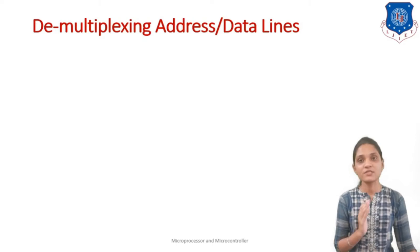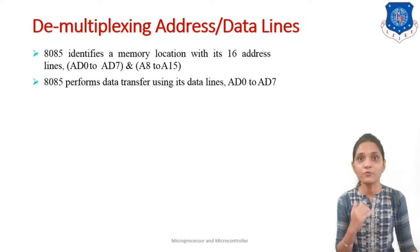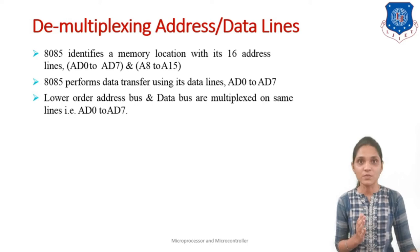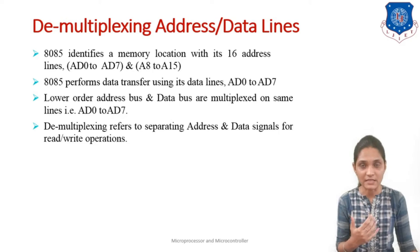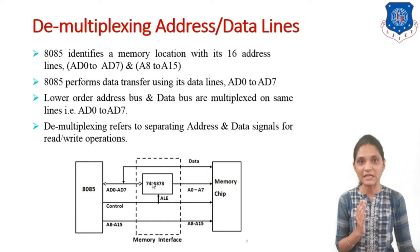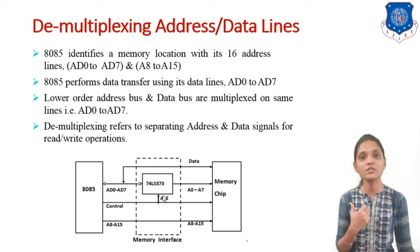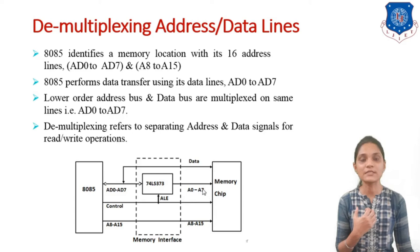Next we will see the demultiplexing of address and data. The 8085 identifies a memory location with the 16-bit address lines A0 to A7 and A8 to A15, and performs data transfer using the data lines D0 to D7. The lower order address bus and data bus are multiplexed on the same lines AD0 to AD7, so we have to demultiplex them. Demultiplexing refers to separating the address and data signals for read and write operations. For this, we use a D-latch where we store AD0 to AD7 and bifurcate them as data as well as address. A8 to A15 are directly given, and ALE is used for this operation.